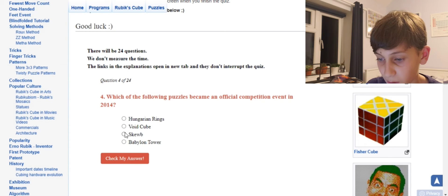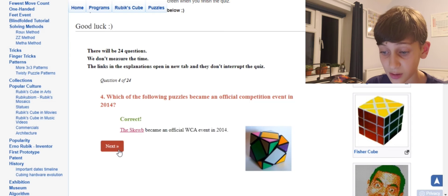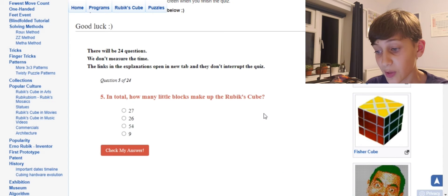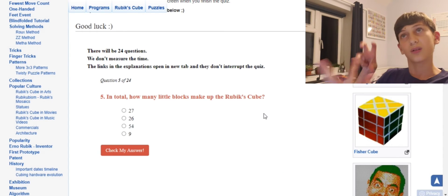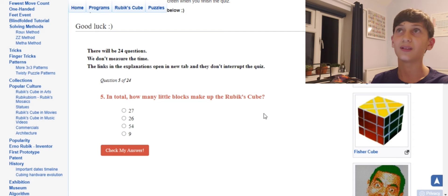Which of the following puzzles became an official event in 2014? That is Skewb, because none of the others are actually events anyway. In total, how many little blocks make up the Rubik's Cube? Well, you got 12 edge pieces and then you got corner pieces...